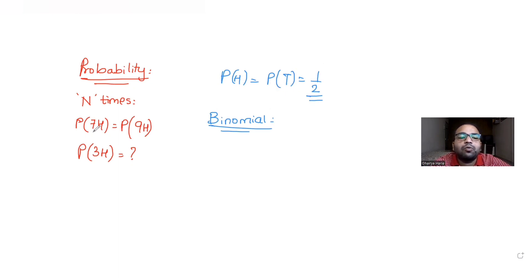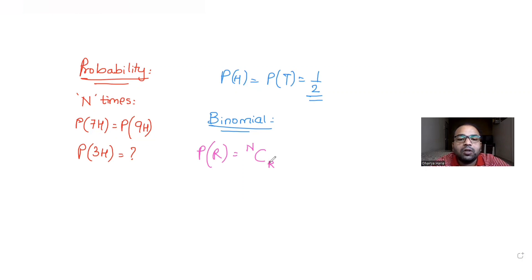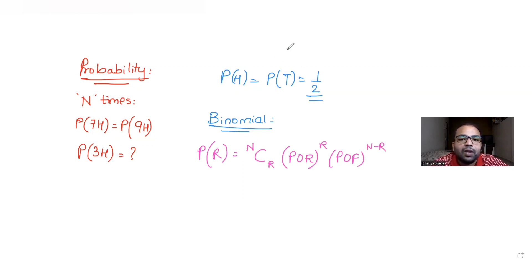When we have binomial distribution, the probability of getting the required outcome is: the total number of tosses C the required number, raised to the probability of success, raised to the number of required outcomes, multiplied by the probability of failure raised to N minus R — that is, total tosses minus the required number.